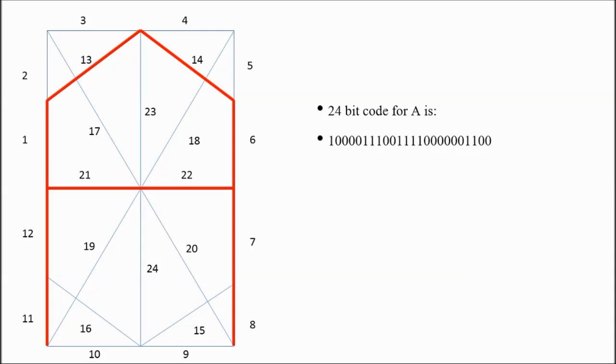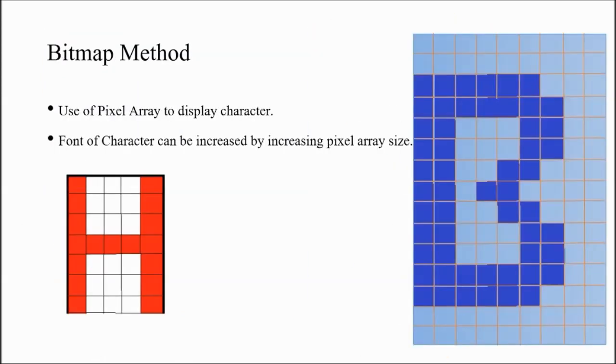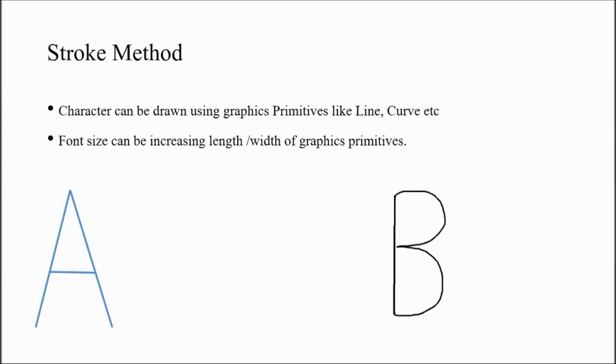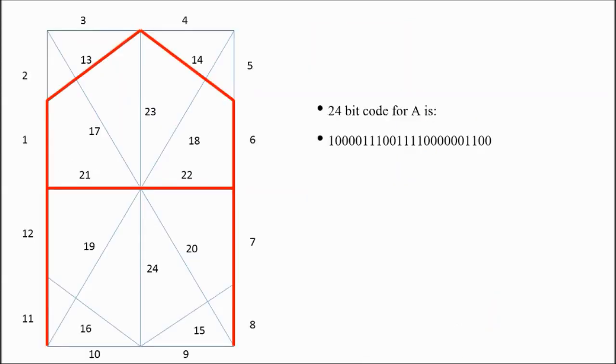This is the method called starburst method. So in this tutorial, we have discussed methods like bitmap method which uses pixel arrays, stroke method where characters are drawn using actual graphics primitives like lines and curves, and starburst method which uses an already defined 24-line pattern to draw characters.